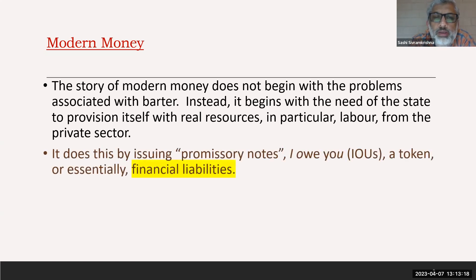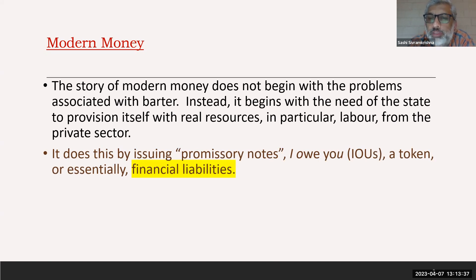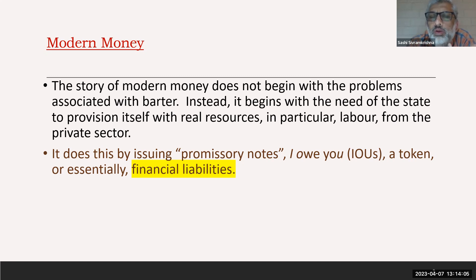In a modern economy, the state does this by issuing promissory notes. It's better to think of money as a financial liability. If you look at any currency note, it says 'I promise to pay the bearer the sum of 100 rupees' — so it's a promissory note. They exchange resources — they buy labor from the private sector for these promissory notes. The bigger question is: why do we accept these promissory notes and, in some sense, work for the state?